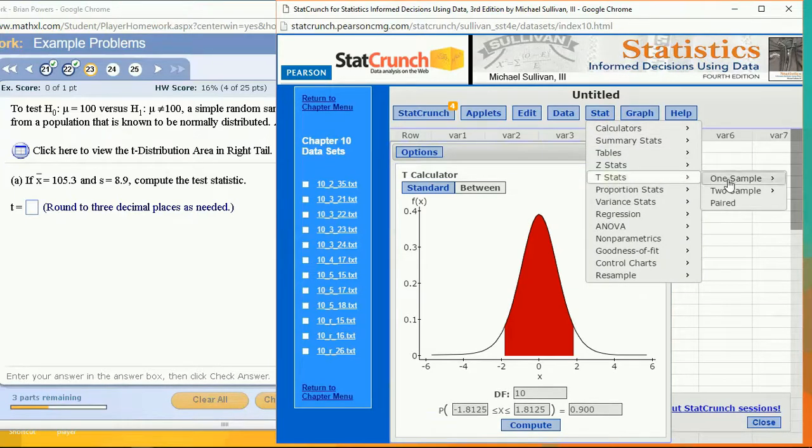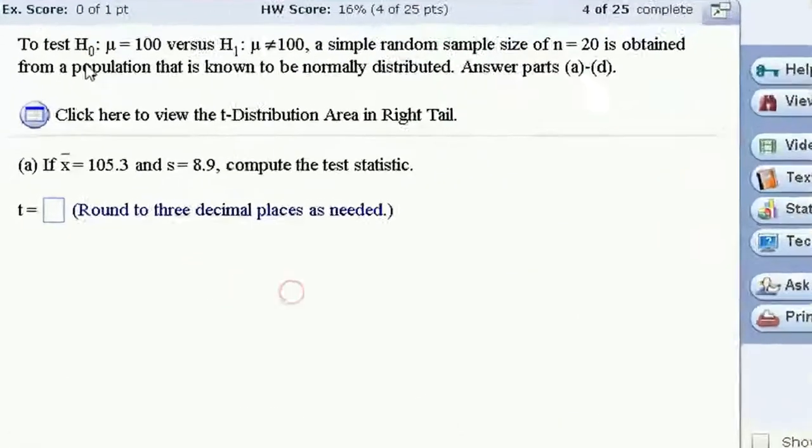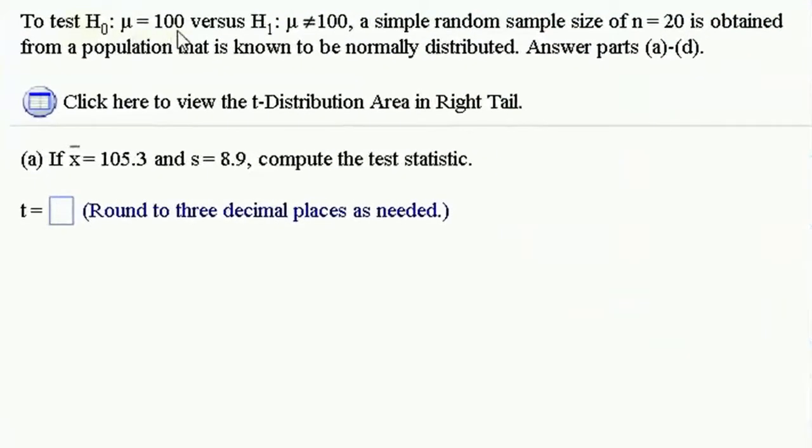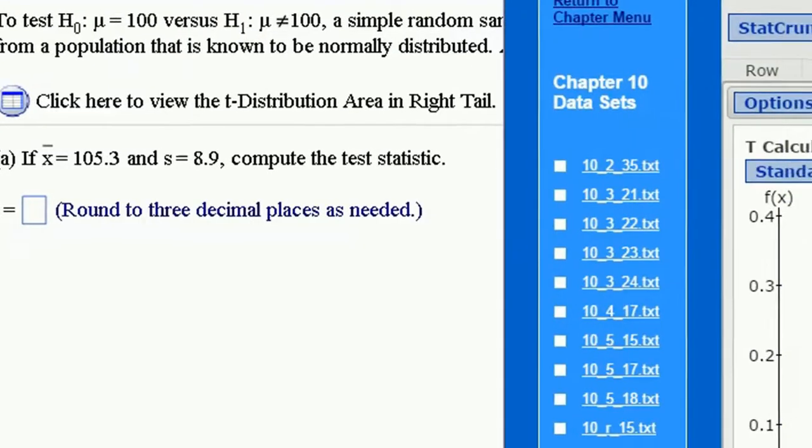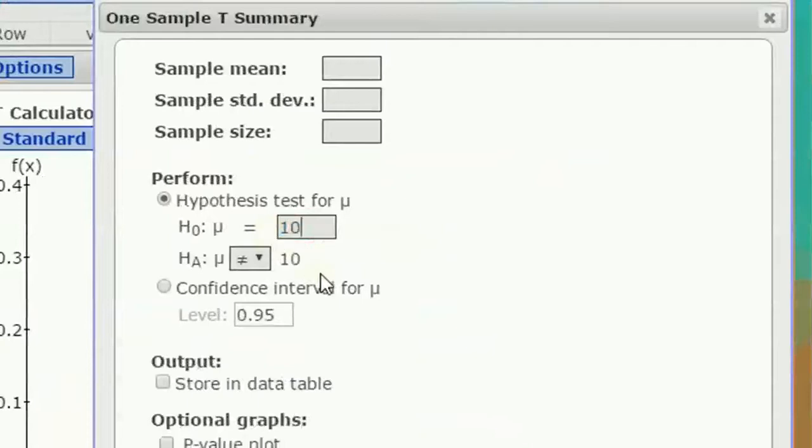For t-stats, we're going to do one sample with summary data. So I'm told I have a null hypothesis μ = 100, alternative μ ≠ 100. Let's put that in right now, μ = 100 is my null, μ ≠ 100 for my alternative.